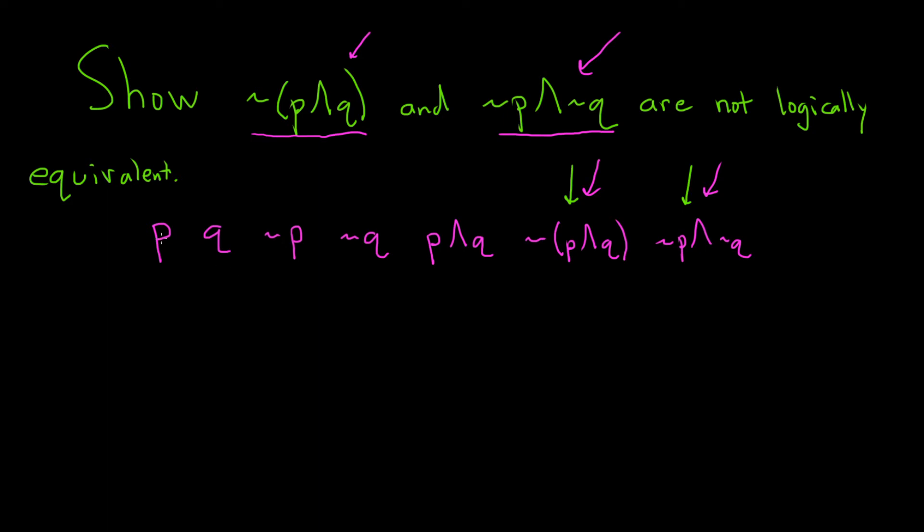So let's just go ahead and fill in all the possible truth values for p and q. So one case is when they're both true, so true and true. Another case would be when p is true and q is false.